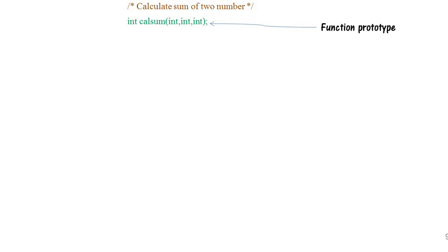In the function prototype, you define the return value, function name, and arguments, followed by a semicolon. This is required because when the compiler compiles your program and encounters this function name, it will know this function is going to be used somewhere in the program. If we don't provide this prototype, the compiler may not recognize the function when it is called before its definition.